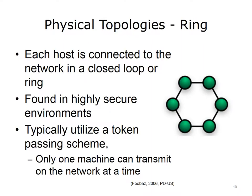Another physical topology is the ring. Within a ring topology, each host is connected to the network in a closed loop or ring. This is an uncommon network type, usually found in highly secured environments. Ring topologies typically use an electronic token passing scheme, which controls access to the network. By using this type of topology, only one machine can transmit on the network at any given time.